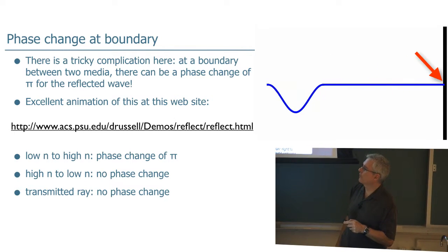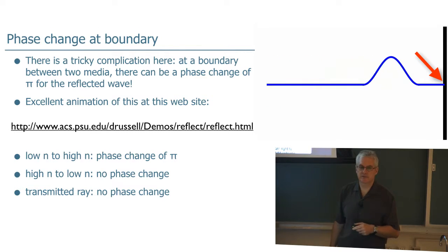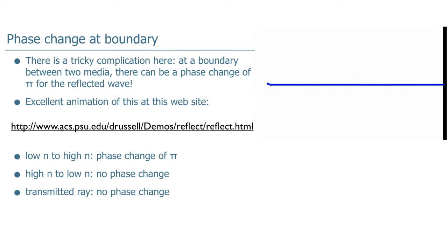But what if one end of the string is just nailed down to the wall? Then when the pulse comes in, when it reflects off the wall, it inverts. That kind of makes sense if you think about it. When the pulse is coming in, there's some oscillator, it gets pulled up, and it interferes with itself and inverts off the wall. So you get a phase change off a hard boundary of 180 degrees pi.